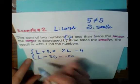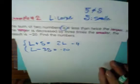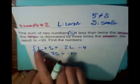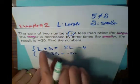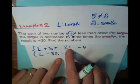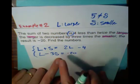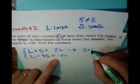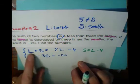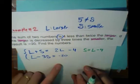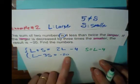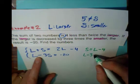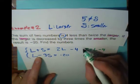So here is my system of two equations. To solve, we'll do a little rewriting. For the first equation, I'll get all variable terms on the left by subtracting L from both sides, giving S equals L minus 4. The second equation we can leave as is: L minus 3S equals negative 20. So here's my new system.